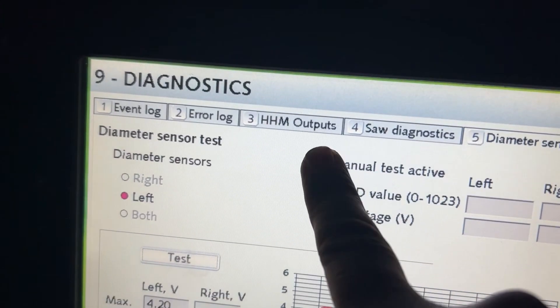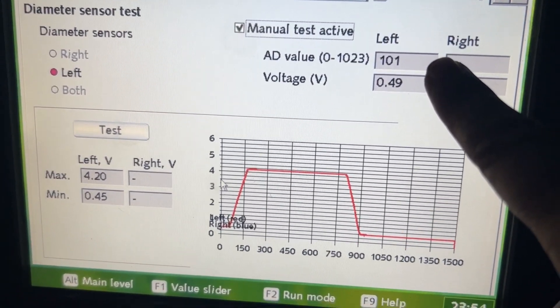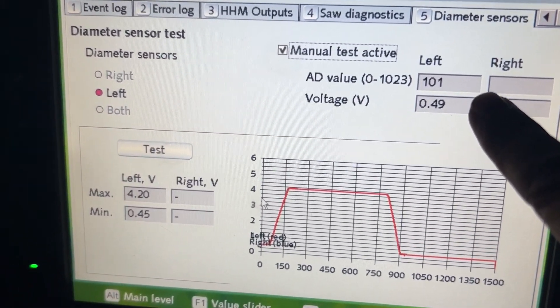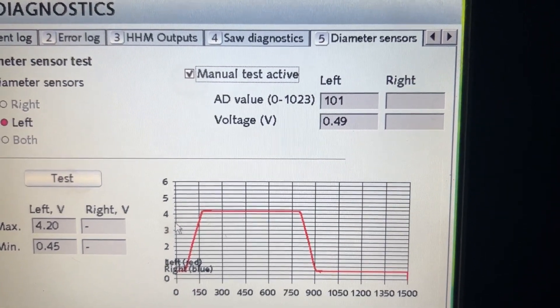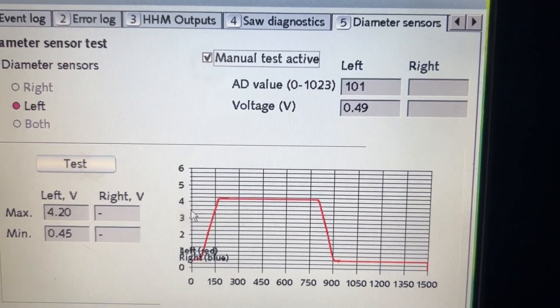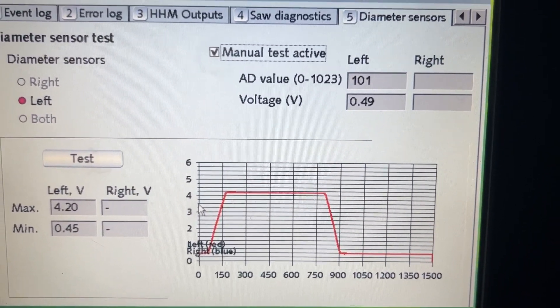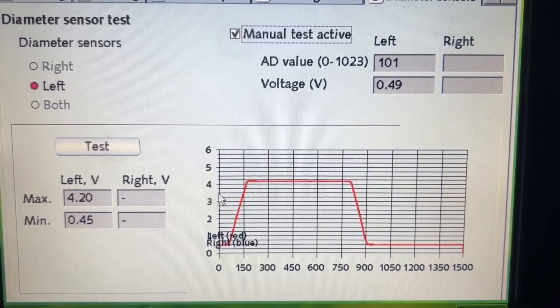What we are looking for is up in here, this is your AD value. For your diameters to be accurate, it needs to be between 98 and 102. 97 and 103 is like pushing it, but anything more and you should recalibrate in order to get proper meters and for everything to run properly.